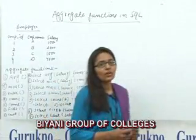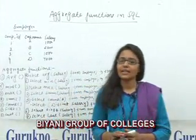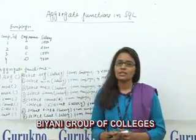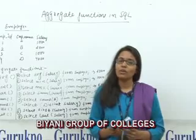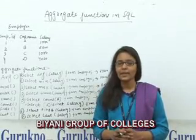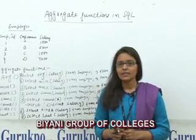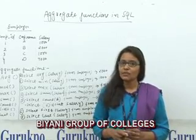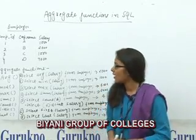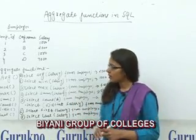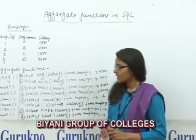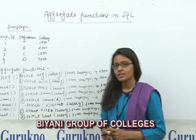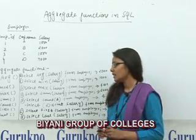Now let us know what are aggregate functions in SQL. Aggregate functions calculate all the values of a column and return a single value as a result. The aggregate functions are average, minimum, maximum, sum, count, first, and last.